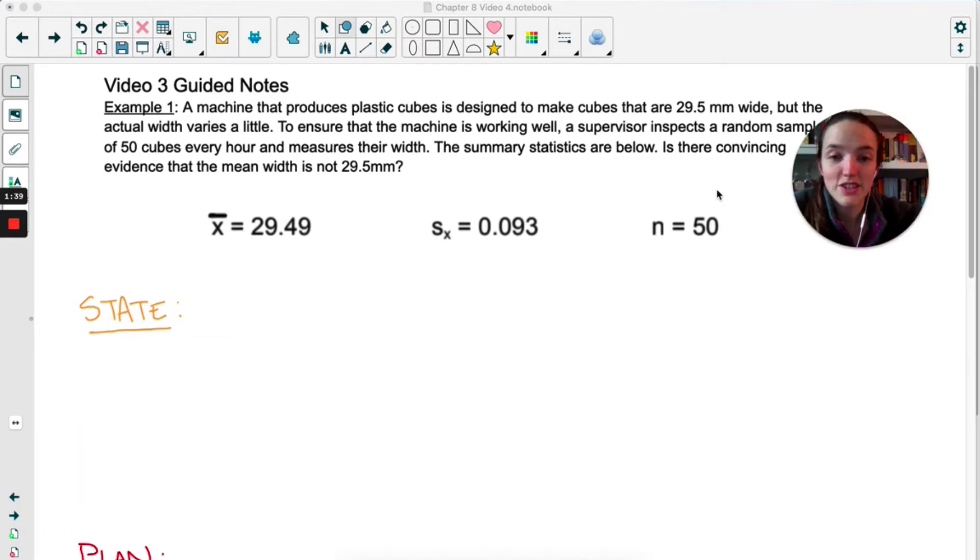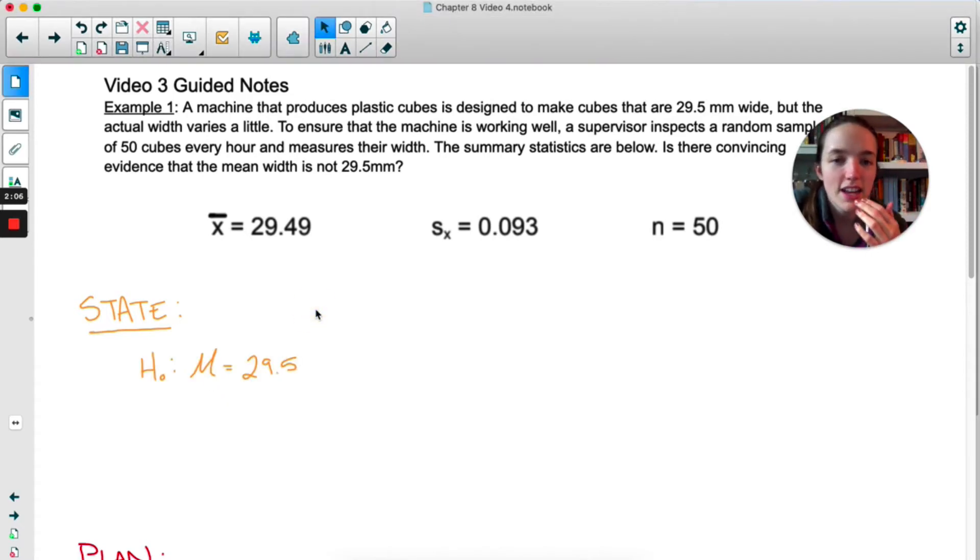Before we get into actually doing any calculations, this is a four-step process question, so we're going to start with our first step, the state step. Our null hypothesis has to be the status quo or what we think is true, and that's definitely that the machinery is working. So our null is going to be that mu equals 29.5. Now here they say, is there convincing evidence that the mean width is not 29.5? They don't care if it's greater or smaller.